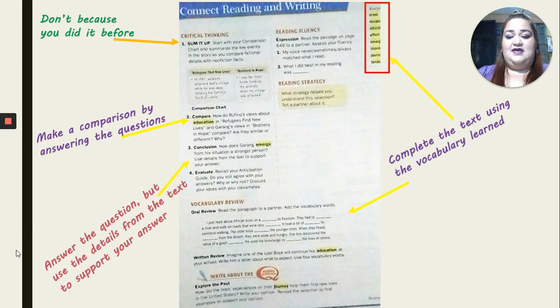So make a comparison by answering the questions. So in this one, it says, how do Rufino's views about education in Refugees Find New Lives and Garang's views in Brothers in Hope compare? So you're going to compare both readings, the Brothers in Hope story with Refugees Find New Lives. Then you're going to make your conclusion, please. It doesn't mean that you're just going to answer these questions like, yeah, because they were happy, because they find new lives. No.